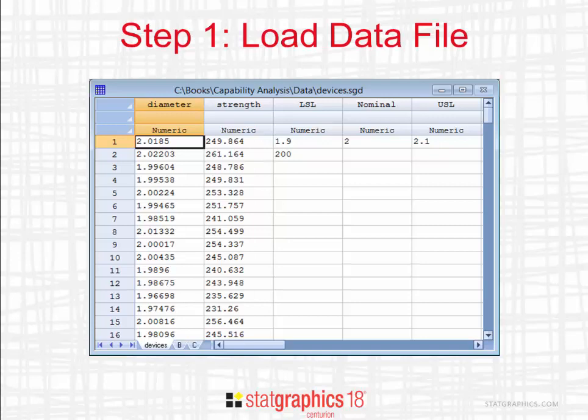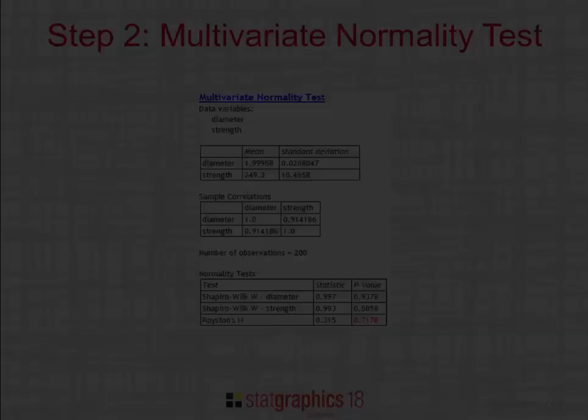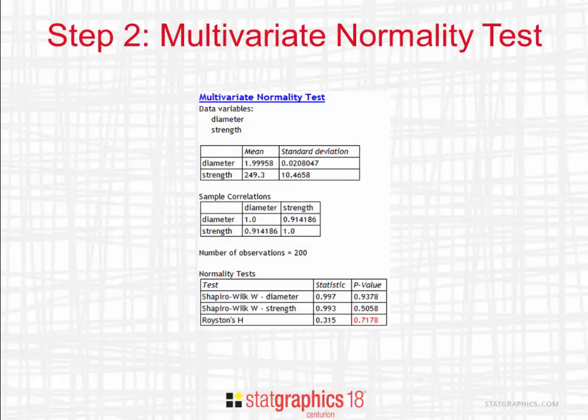Returning to our example, I've loaded diameter and strength into the StatGraphics 18 data sheet. Before I calculate the multivariate tolerance limits, I'm going to run a multivariate normality test.